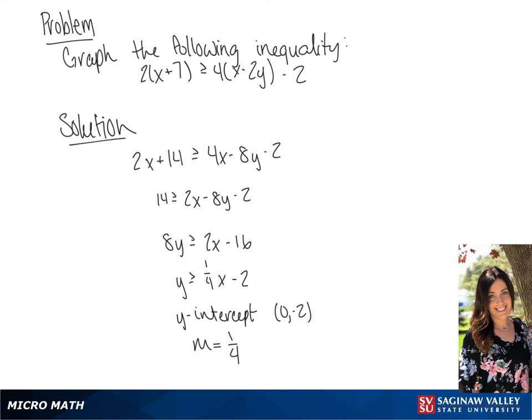We can use this information to plot the graph. We're going to graph the y-intercept, and we're going to use the slope to plot the second point and make our line. It will be a solid line since it's a greater than or equal to problem.